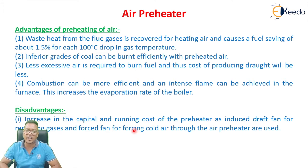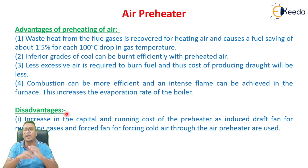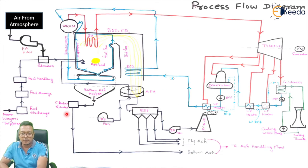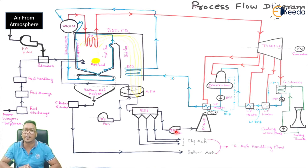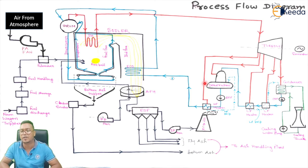The disadvantage of the air preheater is the same as for the economizer. During natural draft, the economizer was increasing the pressure drop, and in the same way the air preheater will increase the pressure drop. Because of this pressure drop from both the economizer and air preheater, we need to use an FD fan and ID fan. We use these fans to reduce the pressure loss so that the draft — that is, the pressure difference — can be maintained, allowing flue gas to flow from the boiler to the chimney easily.